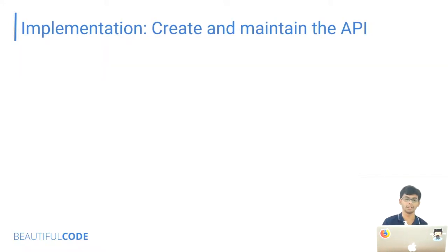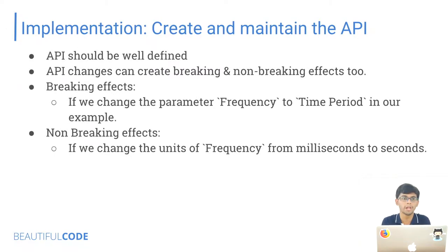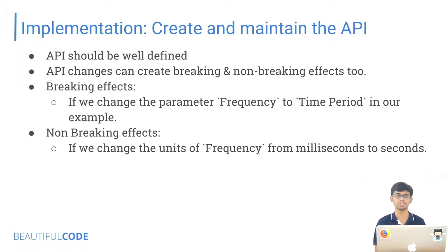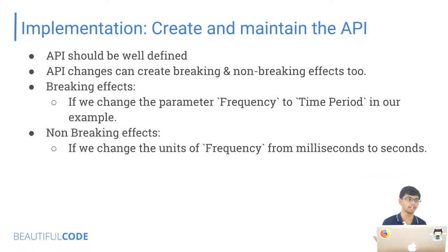Create and maintain the API: you have to have a predefined API, and when making changes you should be aware of the implications. There are two types of effects — breaking changes and non-breaking changes. A breaking change example would be renaming a parameter from 'frequency' to 'time period' — whoever is using your container will need to update their configuration and can't deploy until they do. A non-breaking change could be changing the units of frequency from milliseconds to seconds — it won't break anything but may not behave as expected.